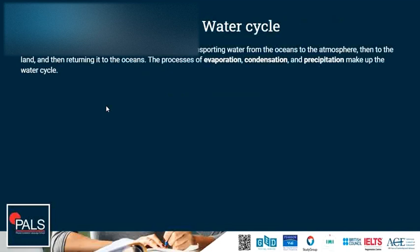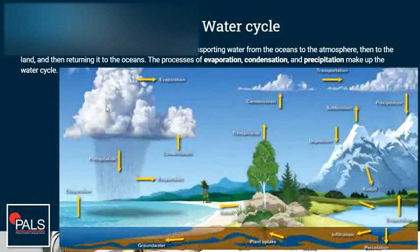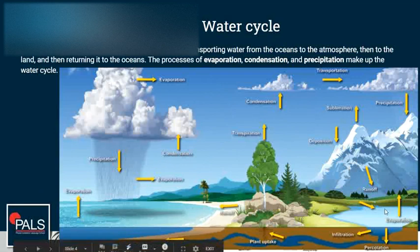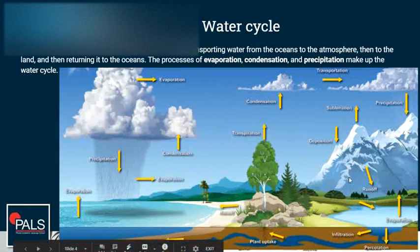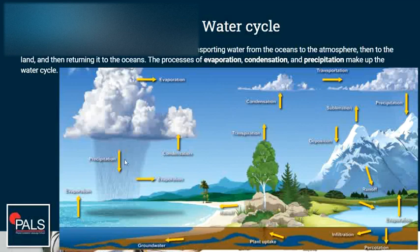The water cycle describes the continuous process of transporting water from the ocean to the atmosphere, then to the land, and then returning to the oceans. The processes of evaporation, condensation, and precipitation make up most parts of the water cycle. We have evaporation in different locations — in oceans, lakes.